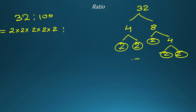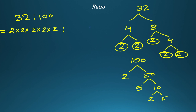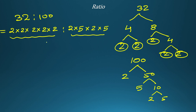Now for 100: factorize as 2 × 50, then 50 as 5 × 10, then 10 as 2 × 5. So 100 = 2 × 5 × 2 × 5. Now cancel matching factors on each side of the ratio: cancel 2 with 2, and cancel another 2 with 2. Left side has 2 × 2 = 4, then 4 × 2 = 8. Right side has 5 × 5 = 25. So 8 ratio 25 is the simplest form of 32 ratio 100.